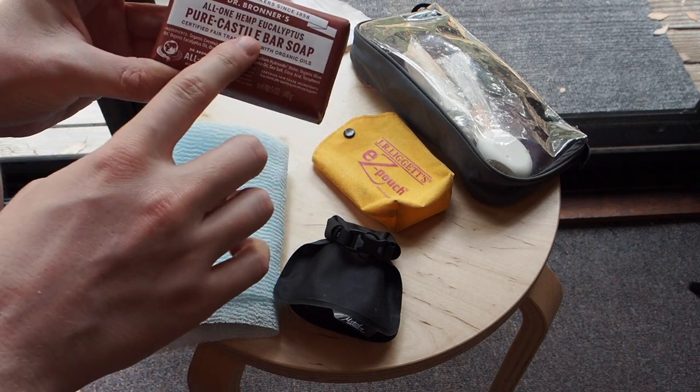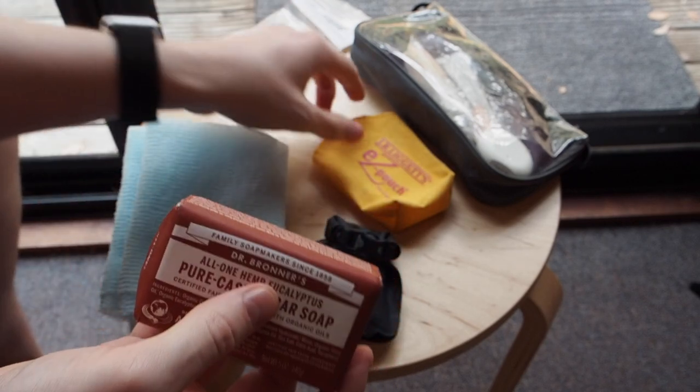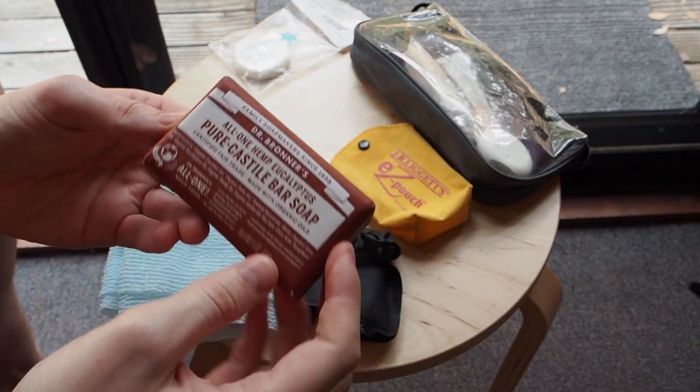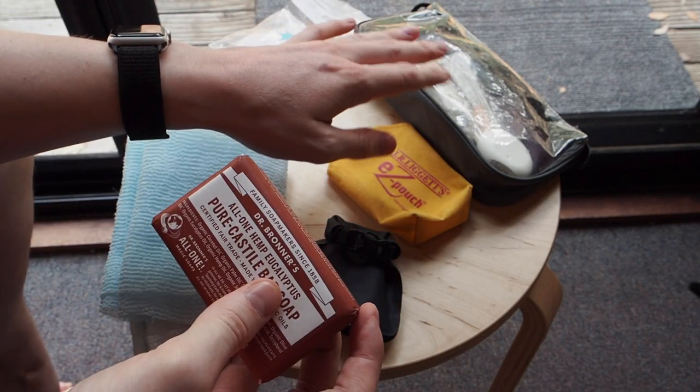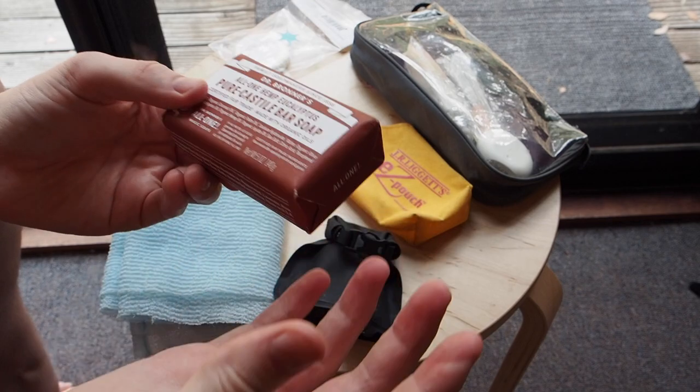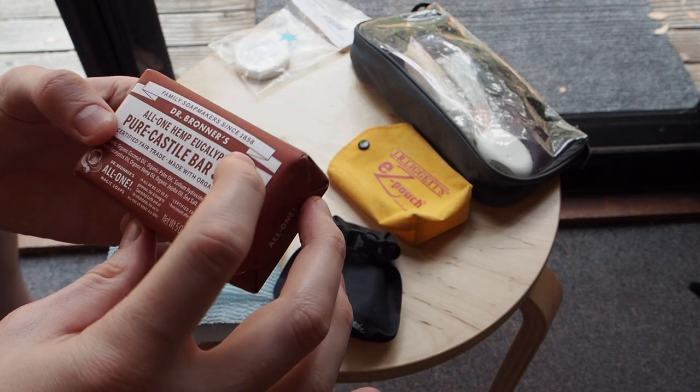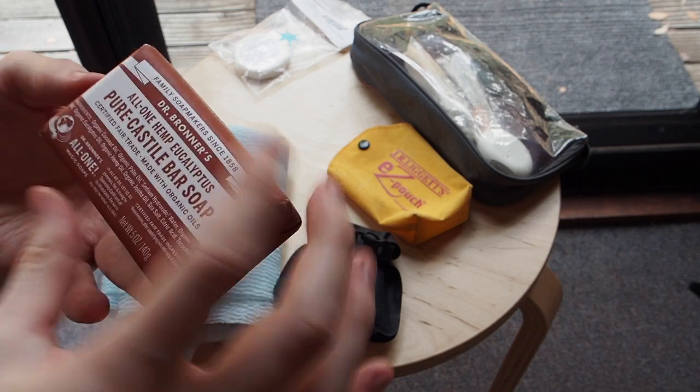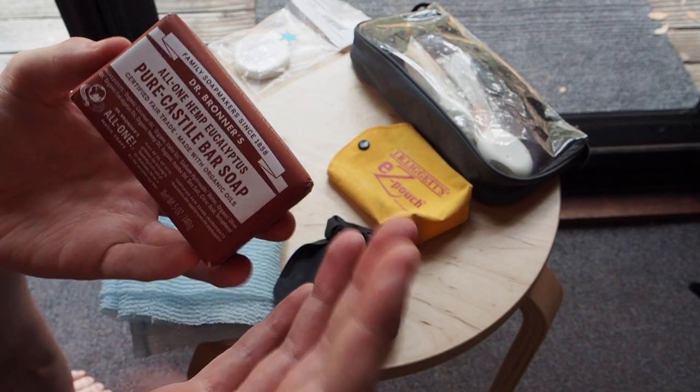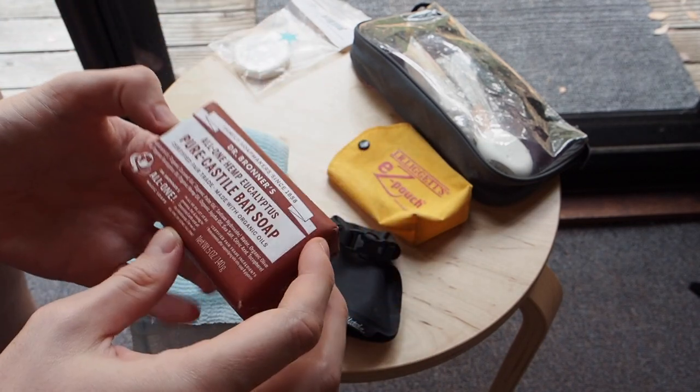If you have a Dr. Bronner's soap bar like this one here, or a JR Liggetts shampoo bar, you'll want to find a way to carry this without it getting the inside of your toiletry bag all sticky with soap residue. When you finish using soap, it often gets wet and soft if you put it into a plastic bag directly after using it. That's something you don't want when traveling, especially if you're traveling the next day—you don't want squishy soap in your bag.